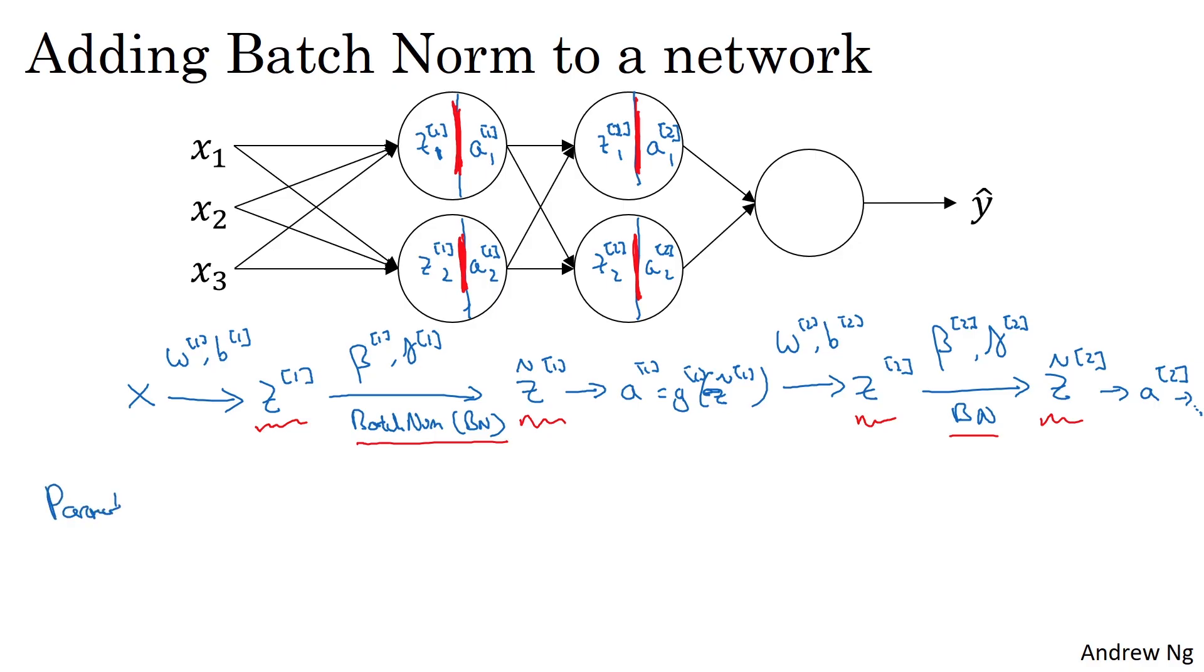So the parameters of your network are going to be w1, b1. It turns out we'll get rid of the b parameters, but we'll see why in the next slide. But for now, imagine the parameters are the usual w1, b1 through wl, bl.